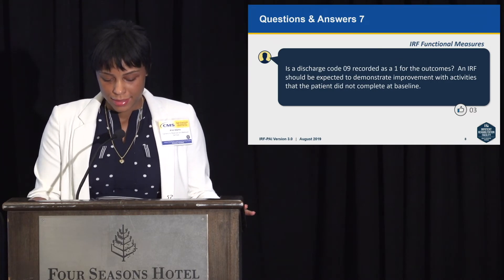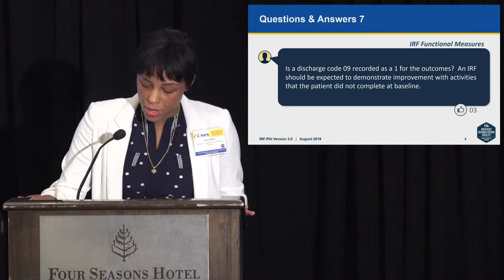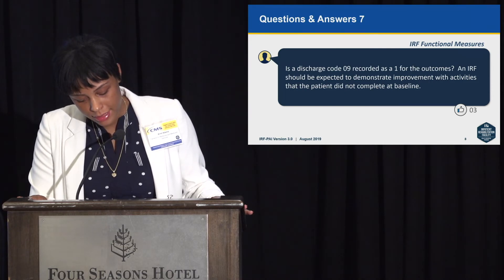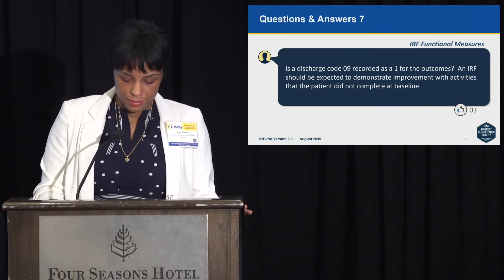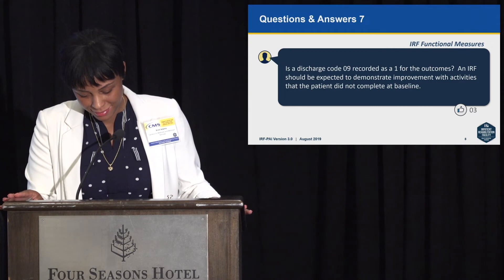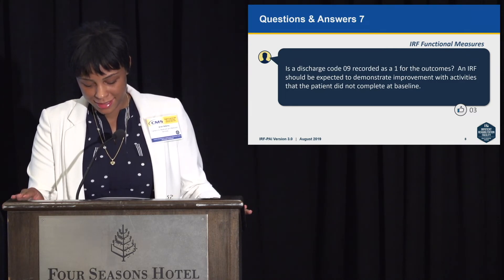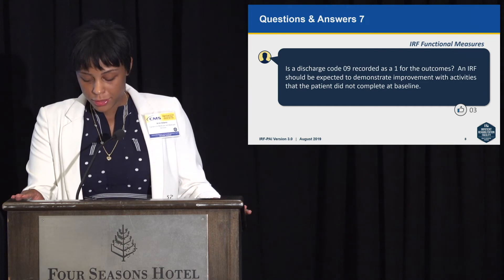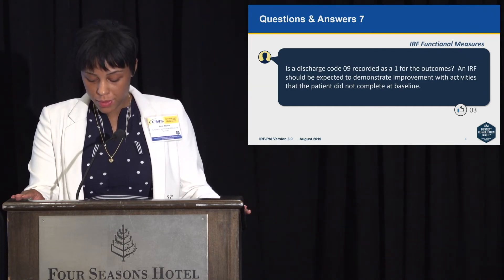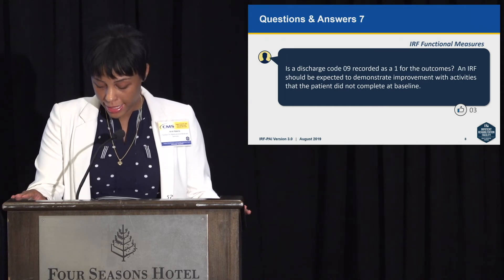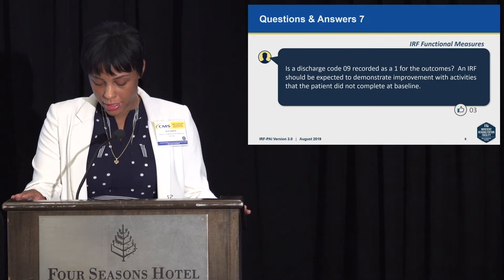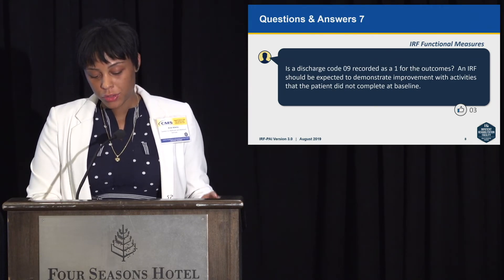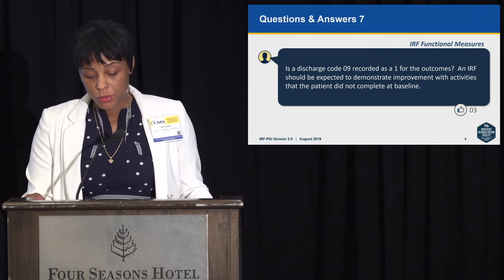Q&A 7: is a discharge code 09 recorded as a 01 for outcomes? An IRF should not be expected to demonstrate improvement with activities that the patient did not complete at baseline. The answer is yes — if an activity is coded 09 at discharge, it will be recoded to 01 for the functional outcome measure. If the patient needed assistance to perform an activity prior to the current illness, injury, or exacerbation, the prior function items would be coded to indicate the patient needed assistance, and any prior device use would be indicated; these data would be used for risk adjustment.